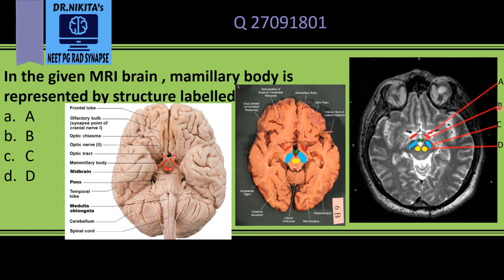So structure A is the optic tract (not optic nerve), structure B is the mammillary body, structure C is the substantia nigra, and structure D is the red nucleus. The mammillary body is represented by the green color labeled B, so the correct answer is option B. This is a very important section that is frequently asked in exams to identify.